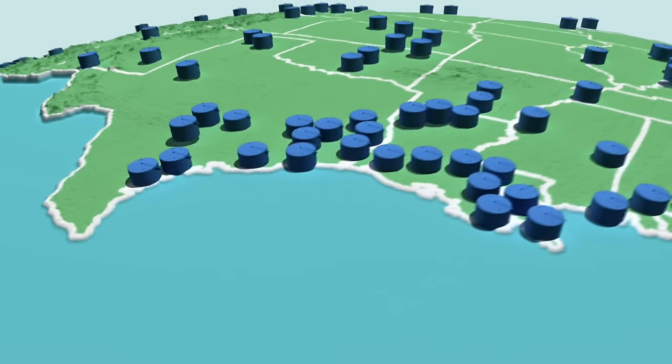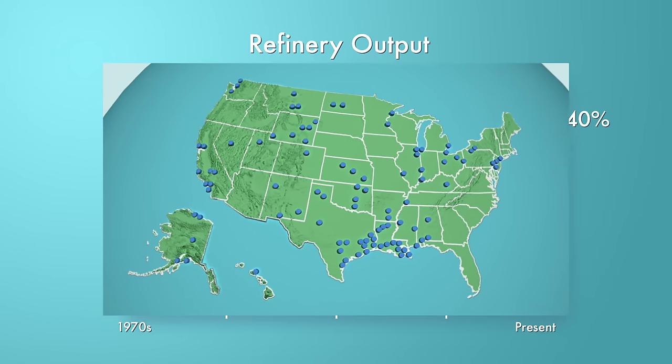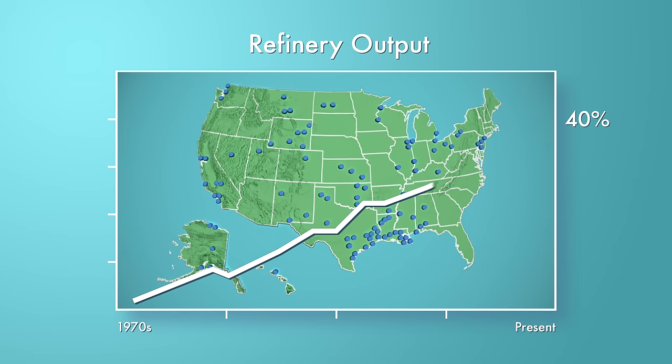In fact, by expanding existing refineries and improving their efficiency, we've increased production of refined products by more than 40% since the 1970s.